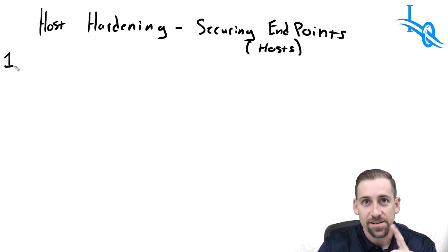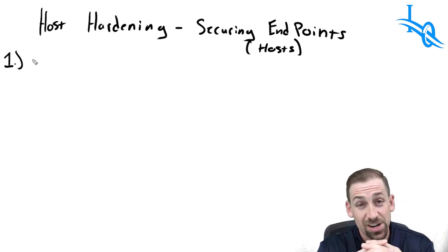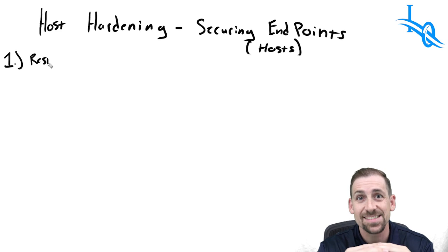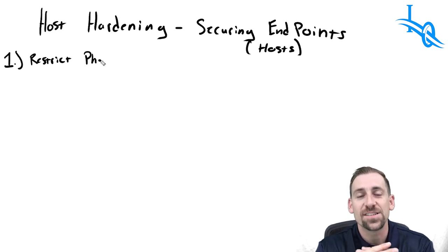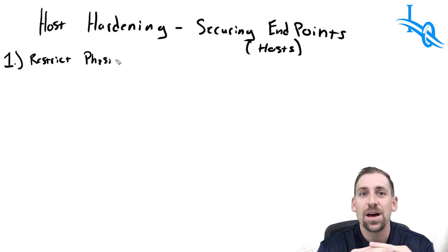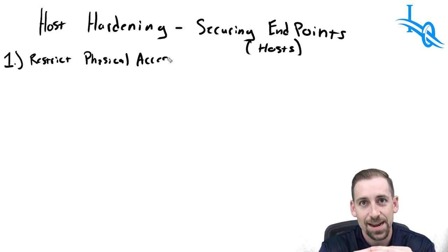Number one is restricting physical access. If we give up physical access to our system, that will result in compromise 100% of the time.